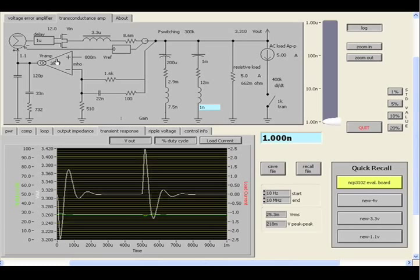We have here the transconductance amplifier that's part of the NCP3102. It has a nominal transconductance of three millisiemens. This is an old program, so it's expressed in Mohs. But at any rate, that's the story. It's a transconductance amp and these are all of the circuit values in the compensation network that you see on the datasheet.